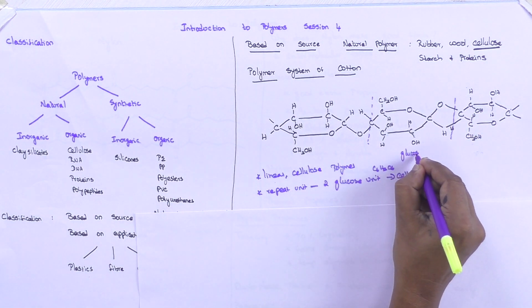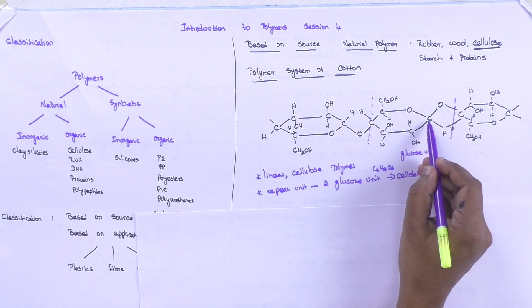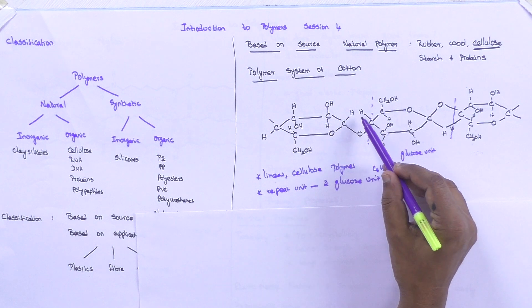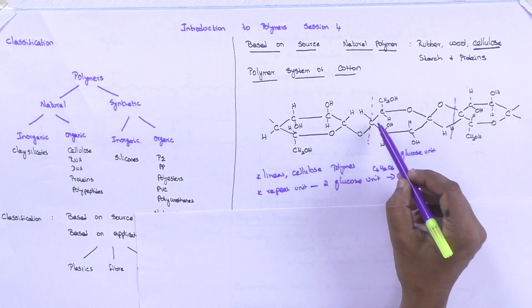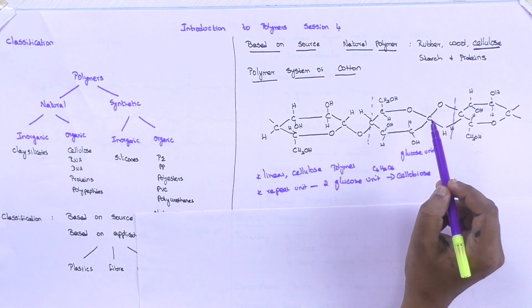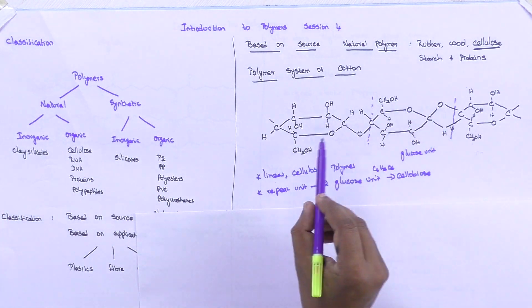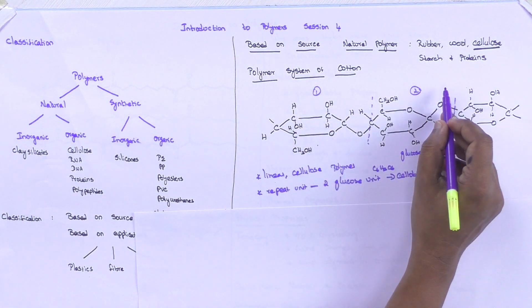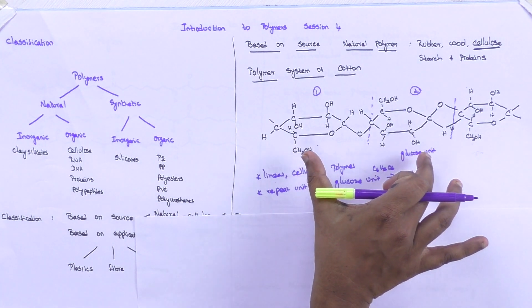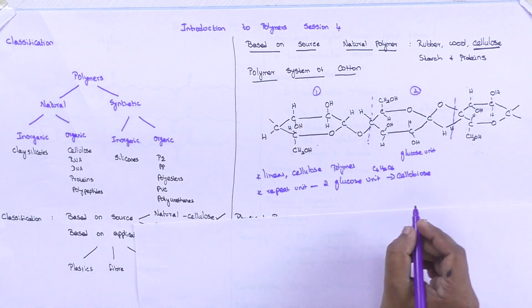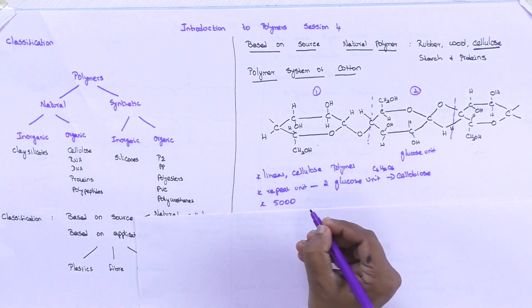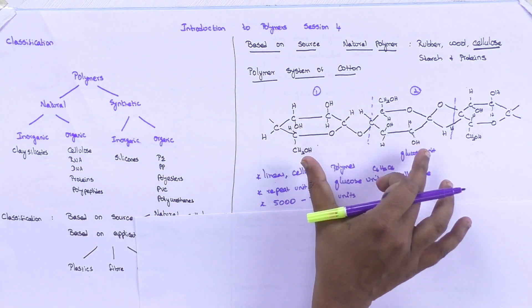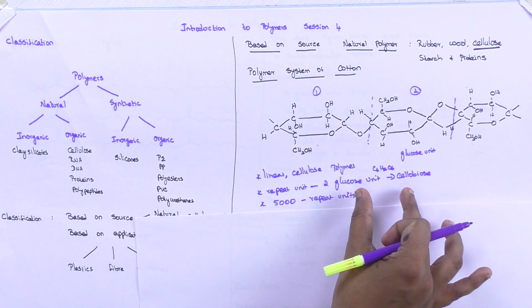The glucose unit has 6 carbon atoms — numbered 1, 2, 3, 4, 5, and 6 — and 12 hydrogen atoms. Some hydrogen atoms may also get replaced, giving C6H12OH. Two glucose units are attached together, forming the repeat unit. This repeat unit is called the cellulose unit, and there are nearly 5000 such repeat units in the cellulose polymer chain.